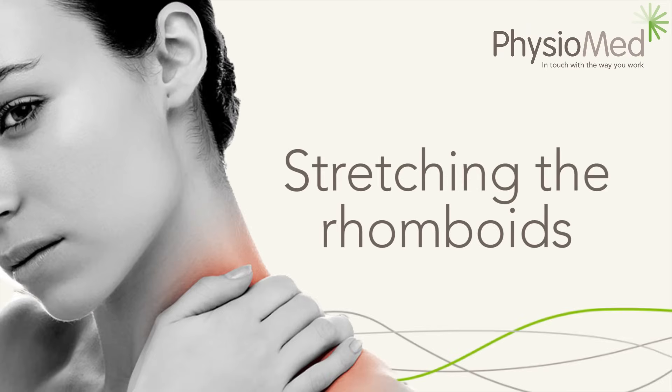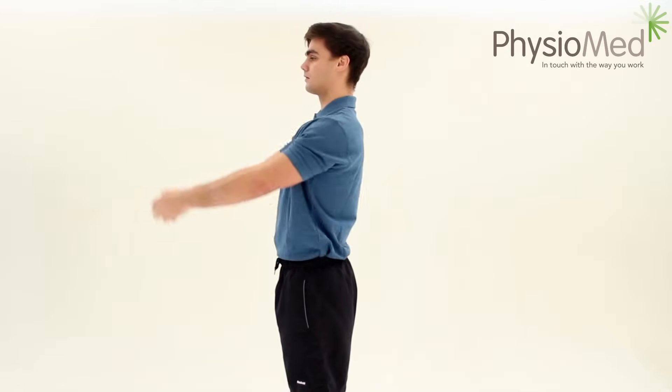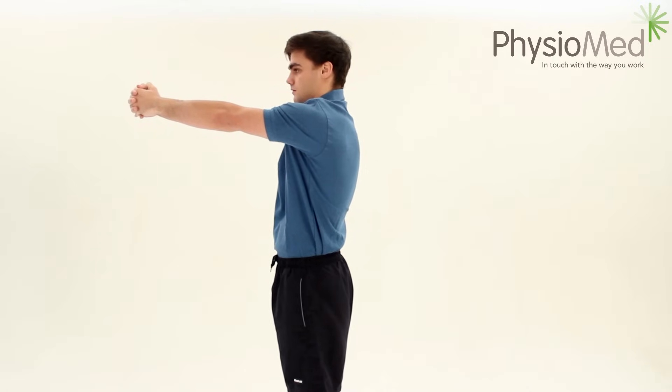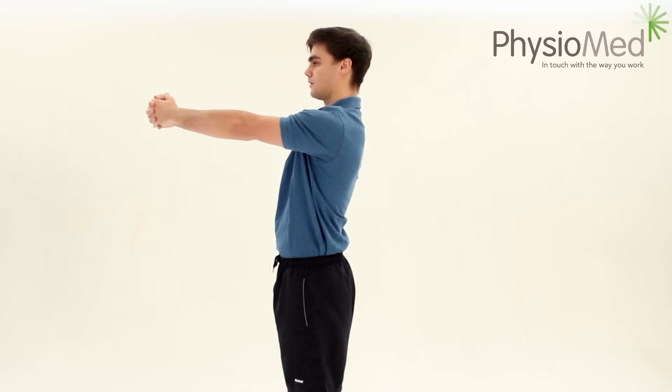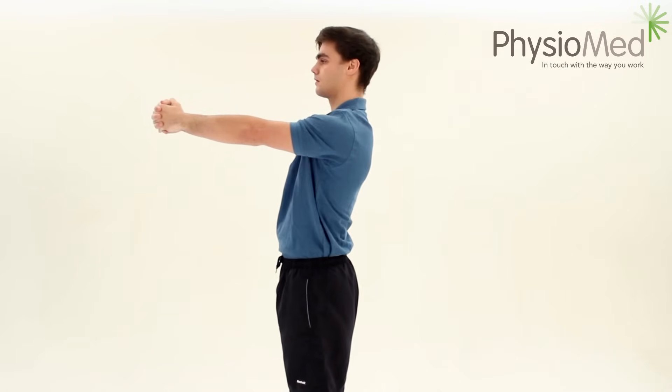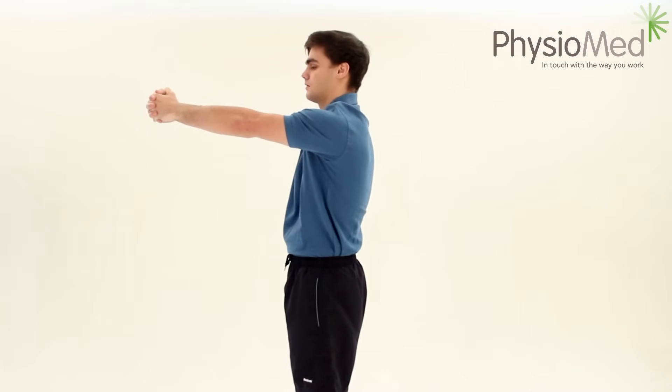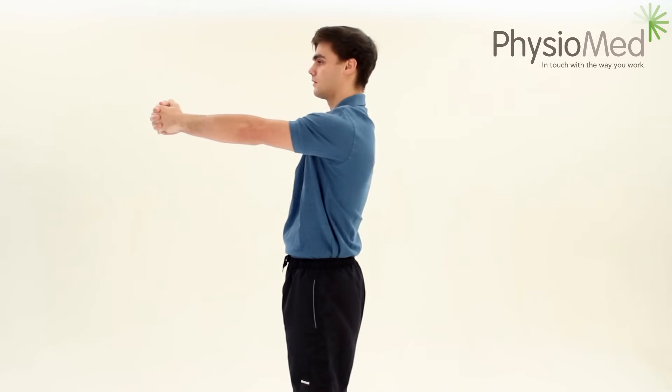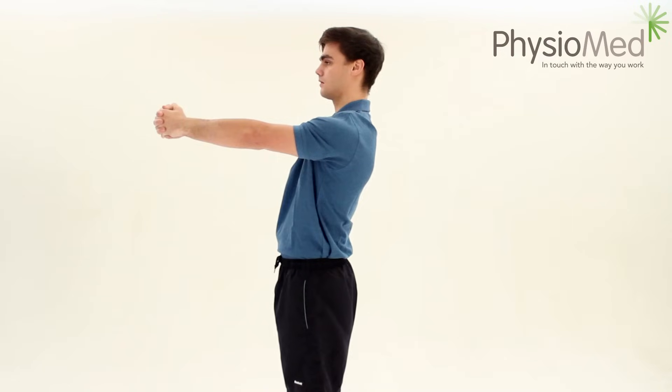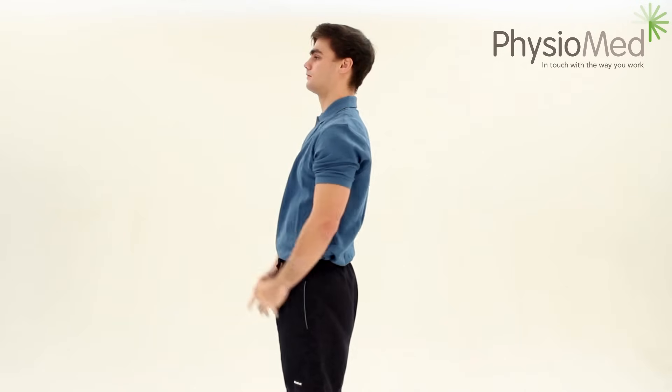Stretching the rhomboids. Your rhomboids are on the inside of the shoulder blades and can become tight over time from either lots of sitting and computer work or repeated lifting and carrying. Keeping this muscle loose will reduce the tension on the shoulder blades and the upper part of your back and neck. Stand and raise your arms forward grasping your hands together. Spread your shoulder blades apart by pulling your arms forward until you feel the stretch between your shoulder blades. Hold this stretch for 2-3 seconds and repeat 5 times. This is a good general stretch that you can do 2-3 times a day.